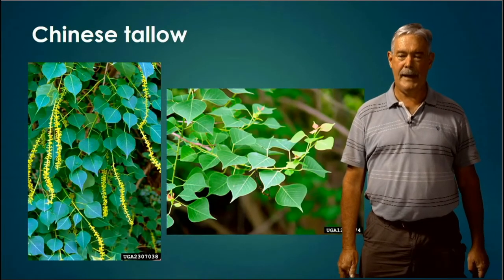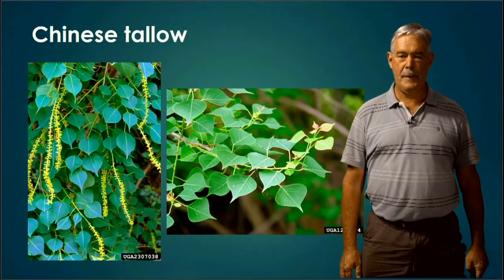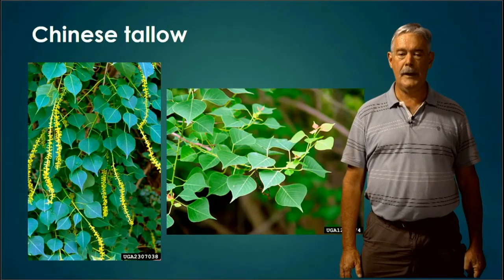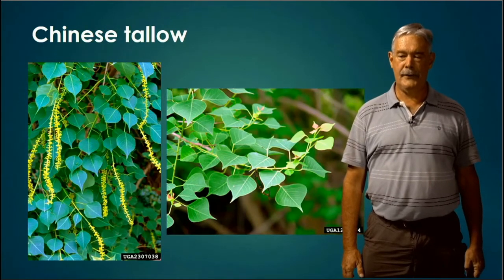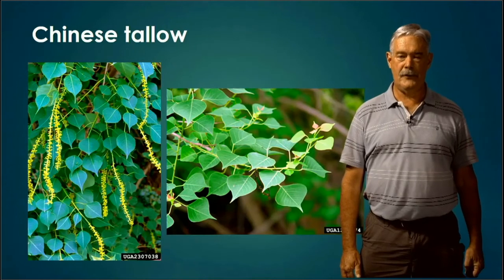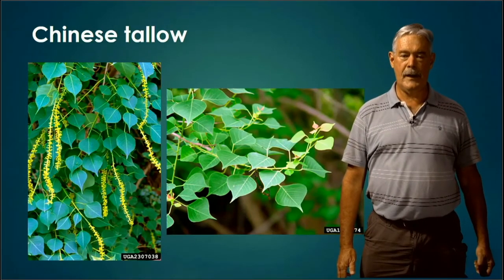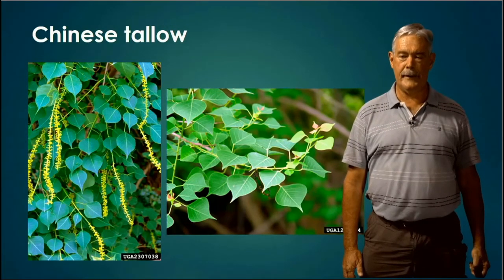Chinese tallow — this is a bad guy. This is one of our invasives that you're supposed to know. It has a very distinctive leaf shape, so make note of that. Sometimes when these trees have seeds on them, they look like popcorn, so you'll hear people call it a popcorn tree. But we call it Chinese tallow. It's invasive and tends to spread into native habitats and squeeze out good native plants.